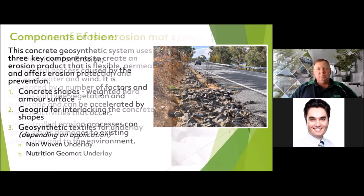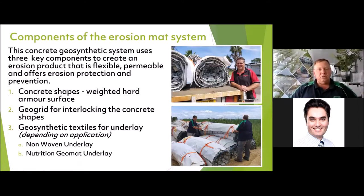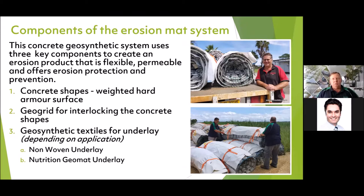The components of the erosion mat — there are really three things. There's the concrete shapes which add weight and offer hard armor to the surface. There's the geogrid, which is the most important part, interlocking all the concrete shapes together and keeping them secure. We also use geosynthetic textiles underneath. For the Australian environment, we use a non-woven underlay or a nutritional underlay, which we've found works best.